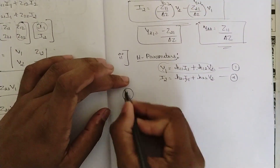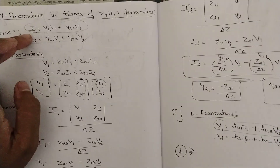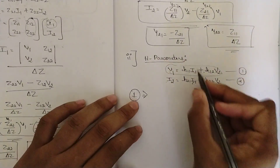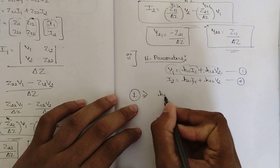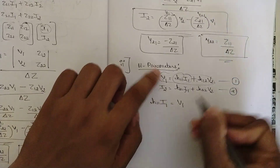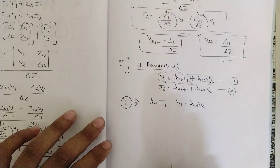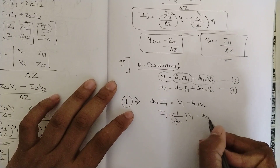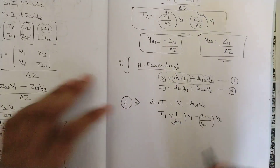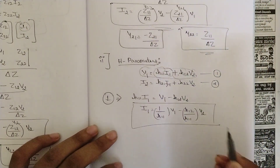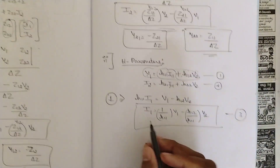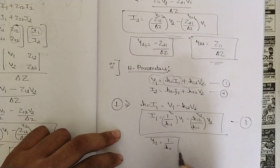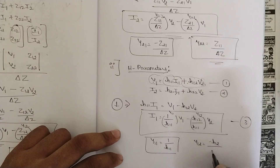Now consider equation 1. Since we are representing in terms of Y parameters, I1 should be on one side. Rearranging: H11·I1 = V1 minus H12·V2. Dividing by H11: I1 = (1/H11)·V1 minus (H12/H11)·V2. Name this equation 3. Comparing with I1 = Y11·V1 + Y12·V2: Y11 = 1/H11, and Y12 = minus H12/H11. Two combinations done — Y11 and Y12.